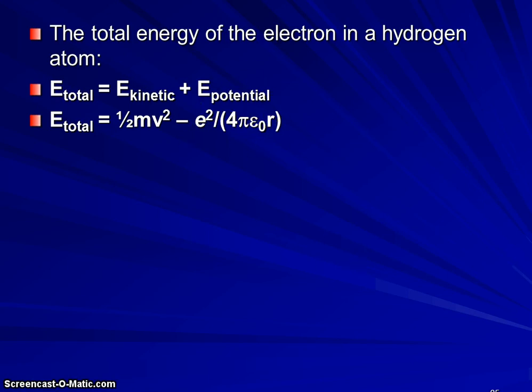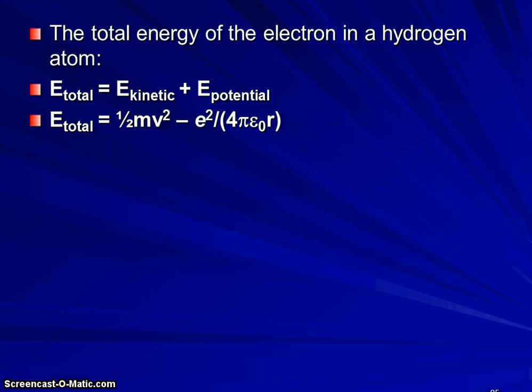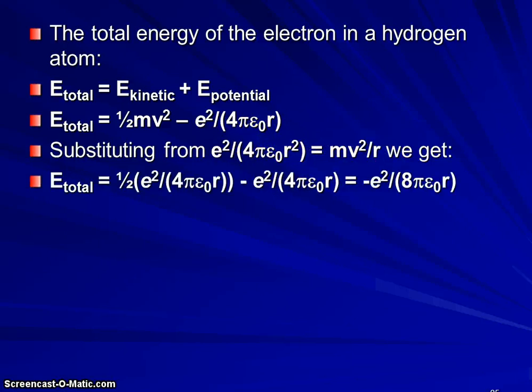So if we substitute in what we just calculated or what we just showed has to be the relationship between the velocity and the radius of the orbit and the electrostatic terms. We can solve for the total energy of the electron. And we have very similar terms here that we can combine and get this particular equation.